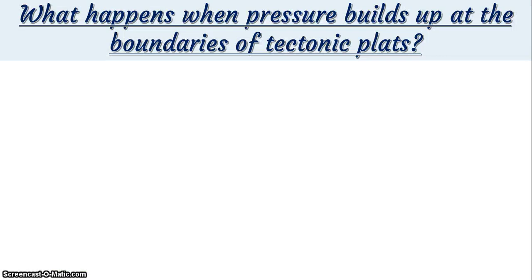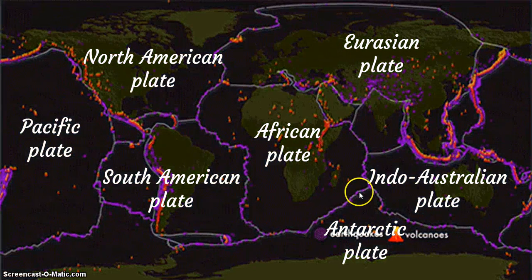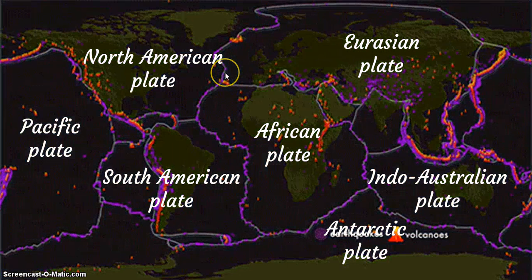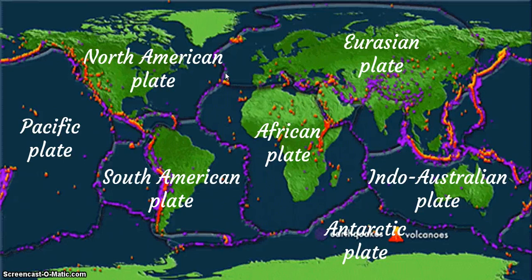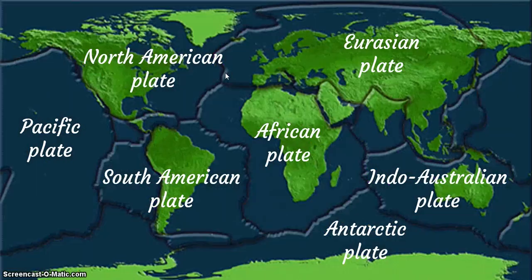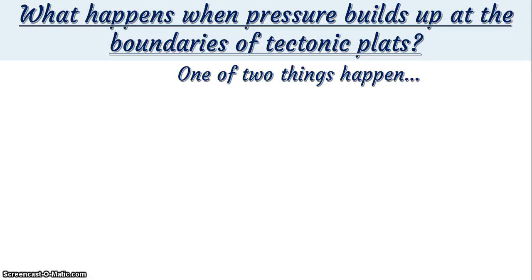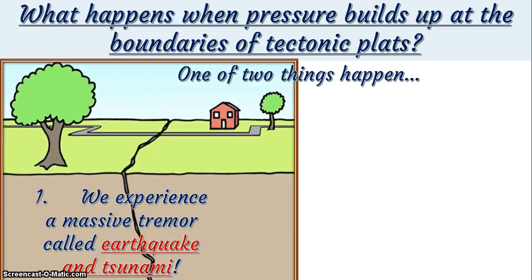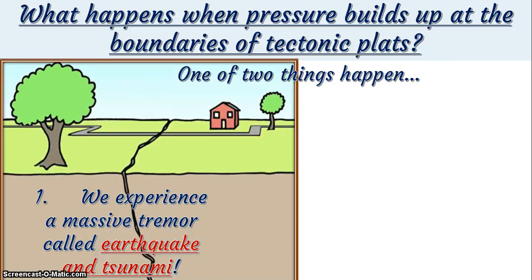What happens when pressure builds up at the boundaries of tectonic plates? Look at the tectonic plates and you can see these boundaries — you can see pressure building up. This is a thinking scientific session, so think closely. Two things happen: it's either we have what you call an earthquake — if it's too much, the Earth trembles. Earthquake is a result of pressure built around tectonic boundaries.